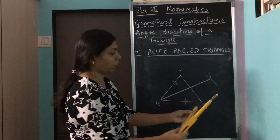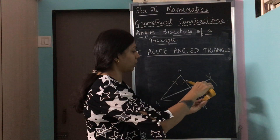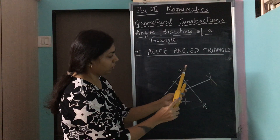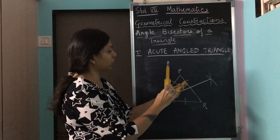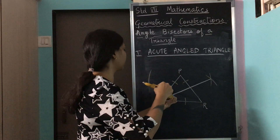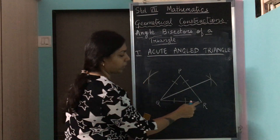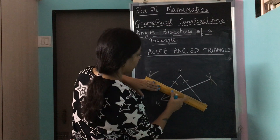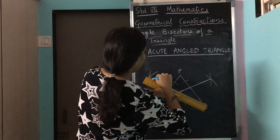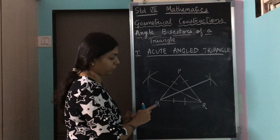Next we go to point R. We place the pointed part on point R and make two arcs — one arc here and one arc here. Then we keep the pointer on the first arc and draw one part of the X, then place the pointer on the second arc and draw the second part, getting our second X mark. We connect this X mark to point R and draw our second angle bisector.